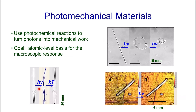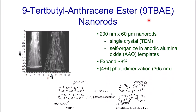Photomechanical materials respond to light by moving — they can twist, curl, and stretch. In other words, they turn photons into mechanical work. The goal of this project is to understand the atomic level basis for these macroscopic responses. In particular, I want to tell you about these 9-tert-butyl anthracene ester nanorods — 200 nanometer by 60 micron nanorods, single crystalline according to TEM, which self-organize in anodic aluminum oxide templates, crystallizing into long single crystals.